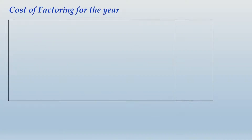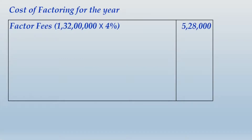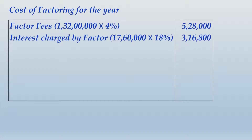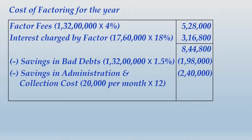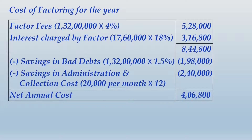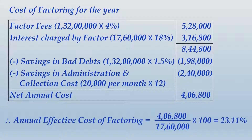Cost of factoring for the year: factor fees are 4 percent of 1 crore 32 lakhs (annual calculation). Interest at 18 percent per annum applied on 17 lakhs 60,000 gives an aggregate of 8,44,800. Subtract savings in bad debts (factoring assumed on non-recourse basis) and savings in administration and collection cost of 2,40,000. The net annual cost comes to 4,06,800 and the effective annual cost of factoring is 23.11 percent.